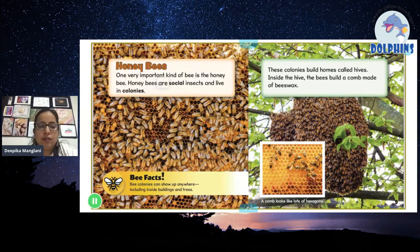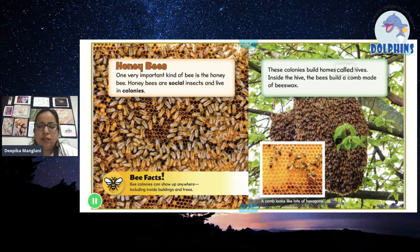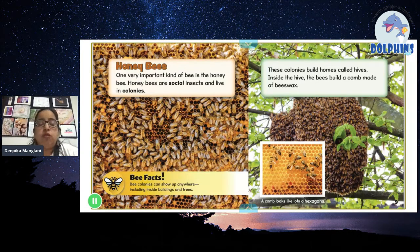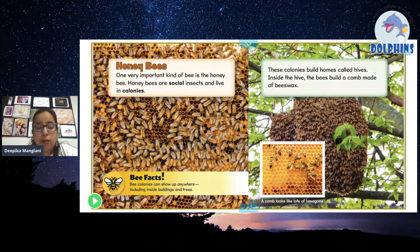Honeybees are social insects and live in colonies. Bee colonies can show up anywhere, including inside buildings and trees. These colonies build homes called hives. Inside the hive, the bees build a comb made of beeswax. A comb looks like lots of hexagons. In my building there are around four or five beehives, and you can see a lot of bees humming around there. When they come together and make a colony, they build a hive — in Hindi we also call it a hive.